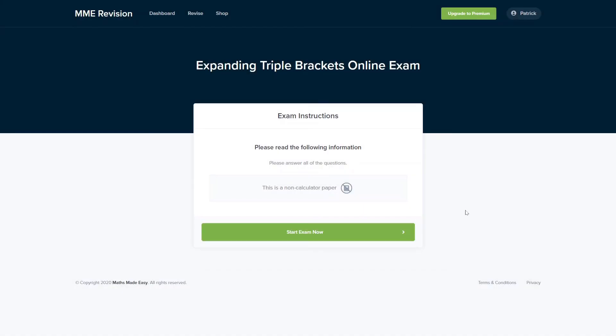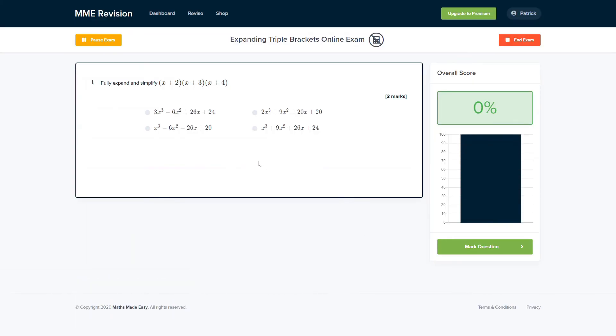If you're feeling ready to test yourself with some triple brackets questions, you can do so with our online exam. This is available through our revision platform, and here you'll find loads of different questions to have a go at, all of which you'll get instant feedback on, allowing you to keep track of where you're going wrong and how you can improve for the actual exams. So if this is something you're interested in, you can click the link below and it will take you straight over there.